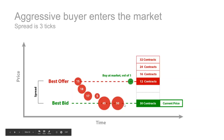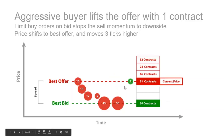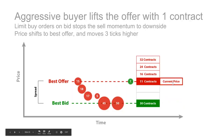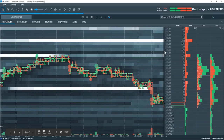This can allude to a lot of different things. We can start to understand trapped volume in these areas, or maybe you're trading into an iceberg order here on the best bid. The aggressive buyer lifts price — lifts the offer — with just one contract. They take one contract of liquidity off the 12 here, and that becomes the current price.